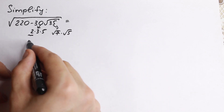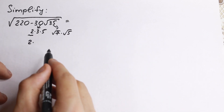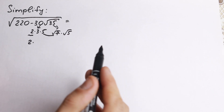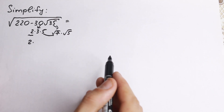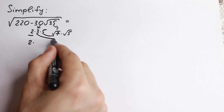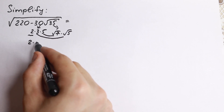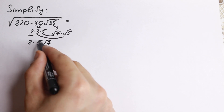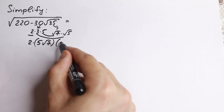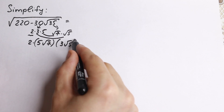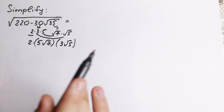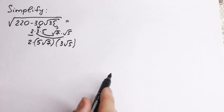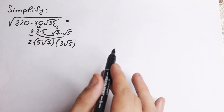Right now I'm going to group these elements. Take a look closely — we have 2, and right here I want to group 5 with square root of 7, and 3 with square root of 5, because we have all multiplications so we can do this. So this is equal to 2 times 5 square root of 7 times 3 square root of 5, which is the same as 30 times square root of 35. This is absolutely the same.